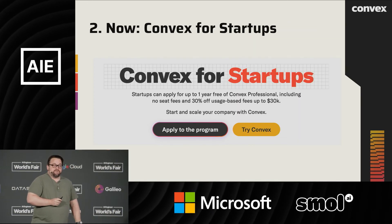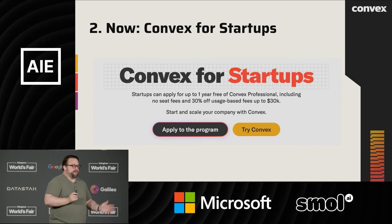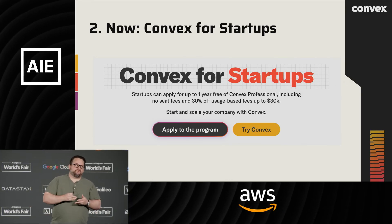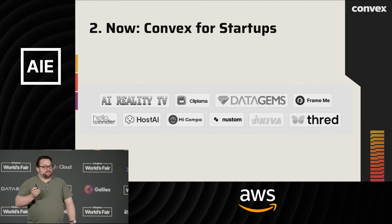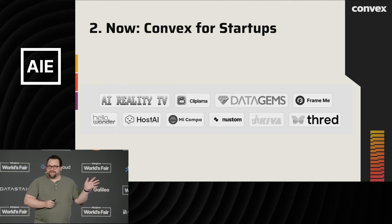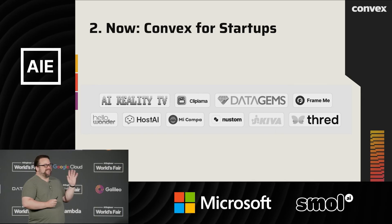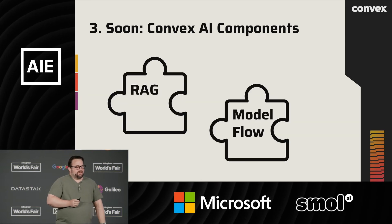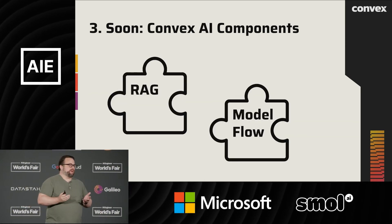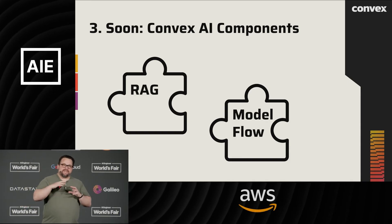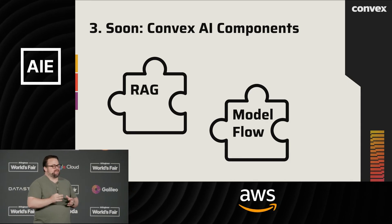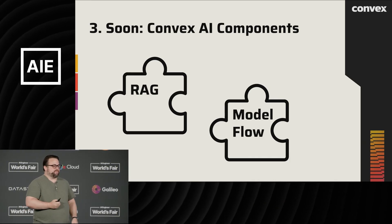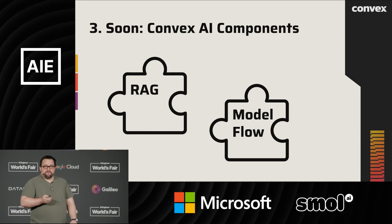The second thing we just did, which we're announcing right now, is a Convex for Startups program — a discount program with access to startup-only forums, events, and more. The first batch includes tons of generative AI companies, our most engaged and excited customers right now. And very soon we're releasing high-level components — a Convex components framework that encapsulates whole state machines as building blocks you can easily drop into your app, co-developed with customers, to encompass sophisticated workflows rapidly.